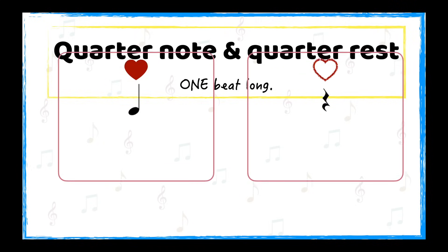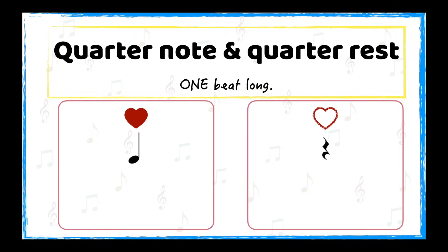A quarter note and quarter rest have one beat. Therefore, when counting a quarter note, we use one number. We will use the number based on which beat in the measure the quarter note starts. Here is an example of four quarter notes. A quarter rest will have the same way of counting, but we will again add parentheses to show that we are counting a rest.